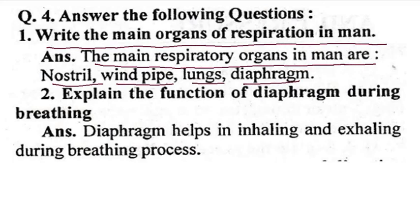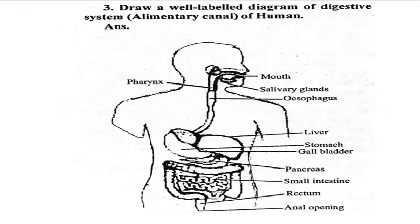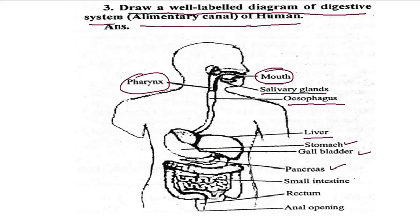Explain the function of the diaphragm during breathing: the diaphragm helps in inhaling and exhaling during the breathing process. Draw a well-labelled diagram of the digestive system. You can see the mouth, then the pharynx, then the salivary glands, then the esophagus, then the liver, stomach, gall bladder, pancreas, small intestine, duodenum, and anus.